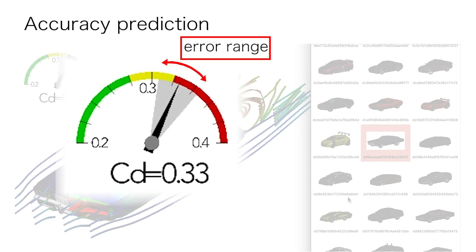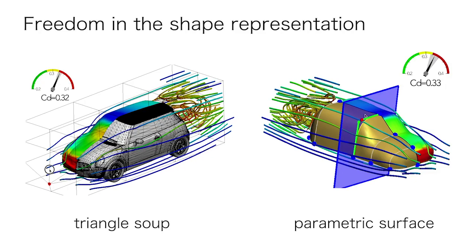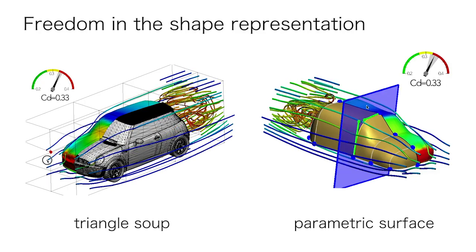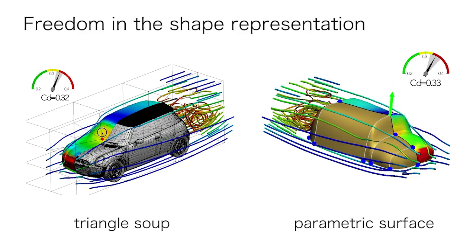Here, the width of the needle in the drag coefficient indicator shows the predicted standard deviation of the error, corresponding to the 68% chance the actual value falls in this range. Our system is not tied to a specific geometric representation of the shape.